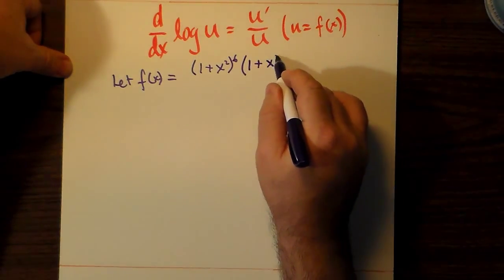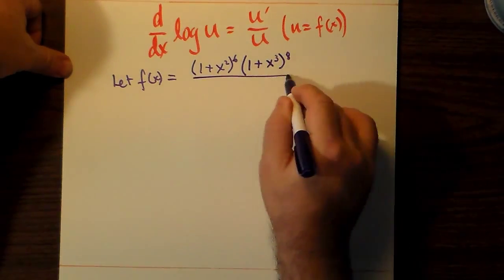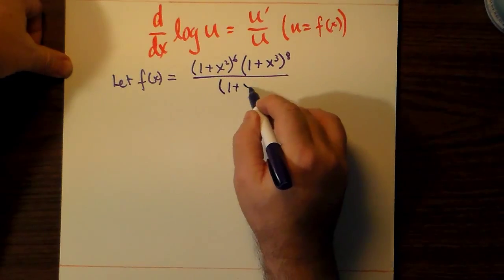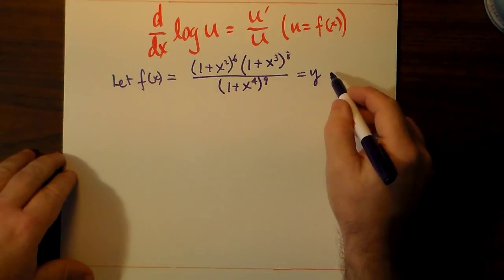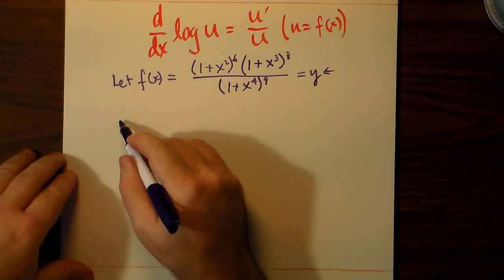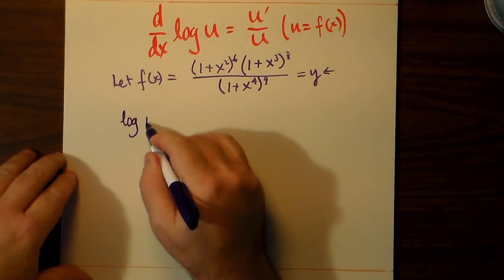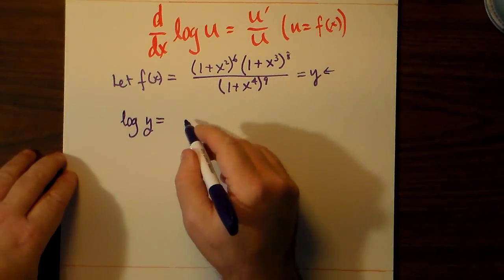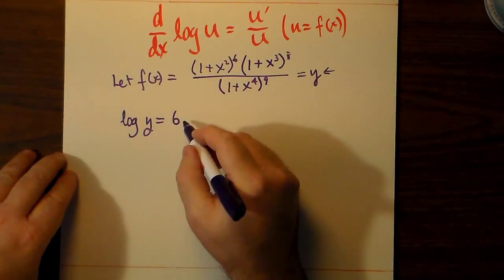And let's say, for example, we have a function of x, which happens to be 1 plus x squared to the power 6, 1 plus x cubed to the power 8, multiplied together, divided by 1 plus x to the 4th to the power 9. We'll call that y, just because it's less cumbersome than f of x.